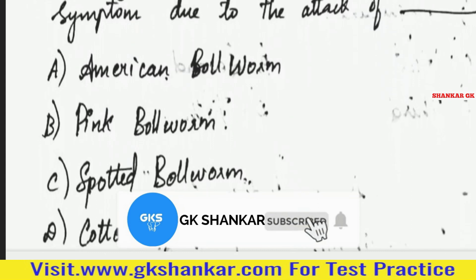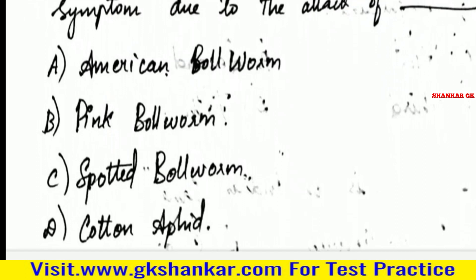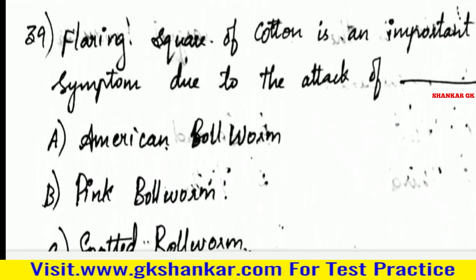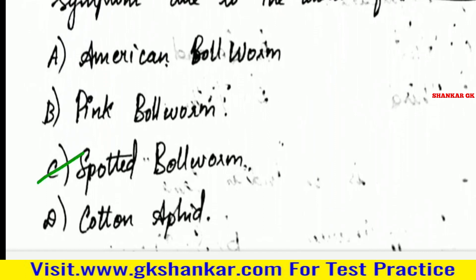Thirty-ninth question: Flaring square of cotton is an important symptom due to the attack of — A. American bollworm, B. Pink bollworm, C. Spotted bollworm, D. Cotton. Answer: C. Spotted bollworm.